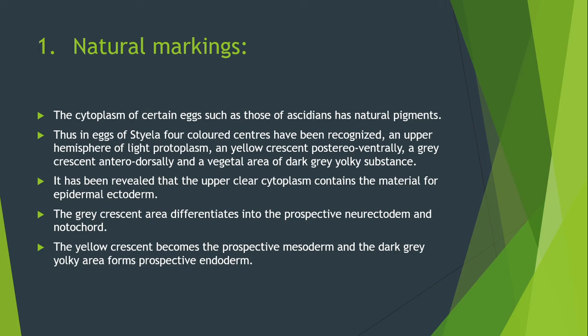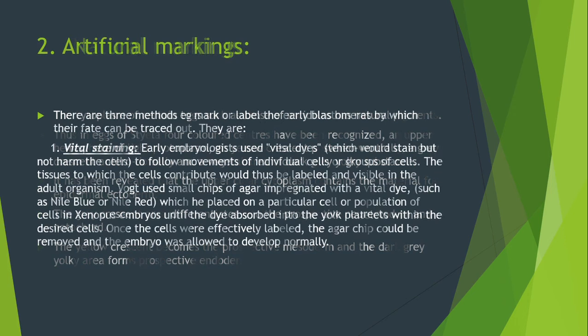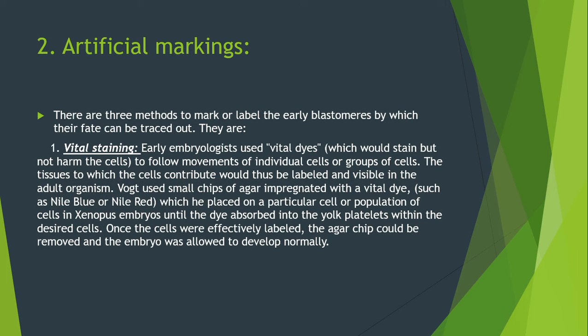The second type is artificial markings. There are three methods to mark or label early blastomeres by which their fate can be traced. The first is vital staining — early embryologists used vital dyes which would stain but not harm the cells, to follow the movement of individual cells or groups of cells.